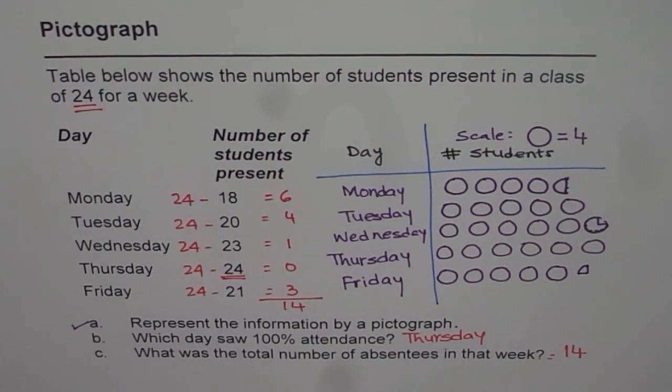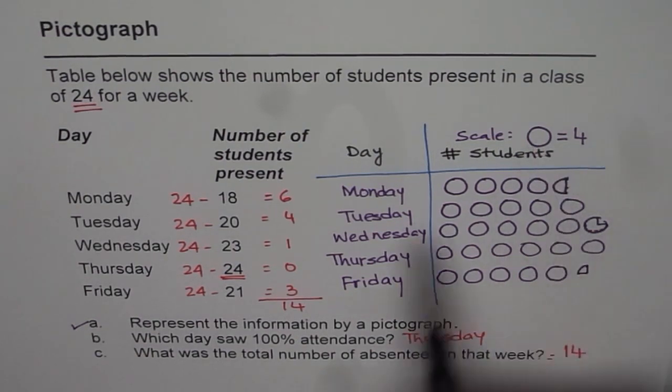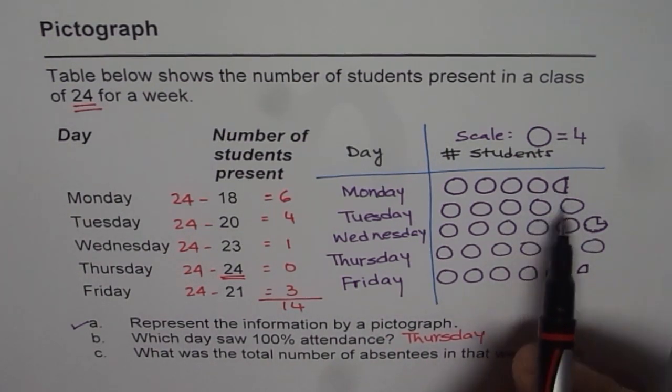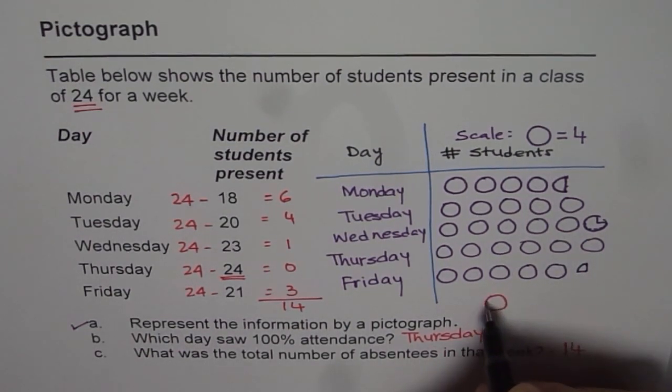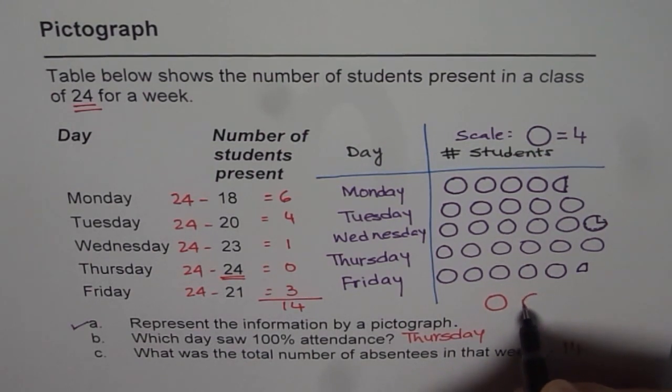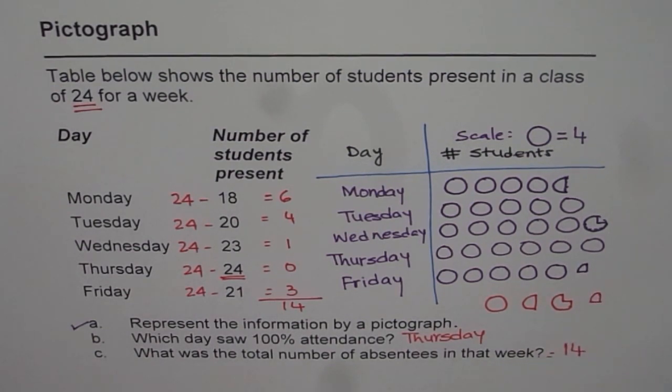So I hope you understand how to represent data in the form of a pictograph. And critical to understand is how to select a picture so that data can be accurately represented. As you can see, full circle is representing 4. So half will represent 2. If I do 3 fourths then 3, and if I do just one fourth it means 1.